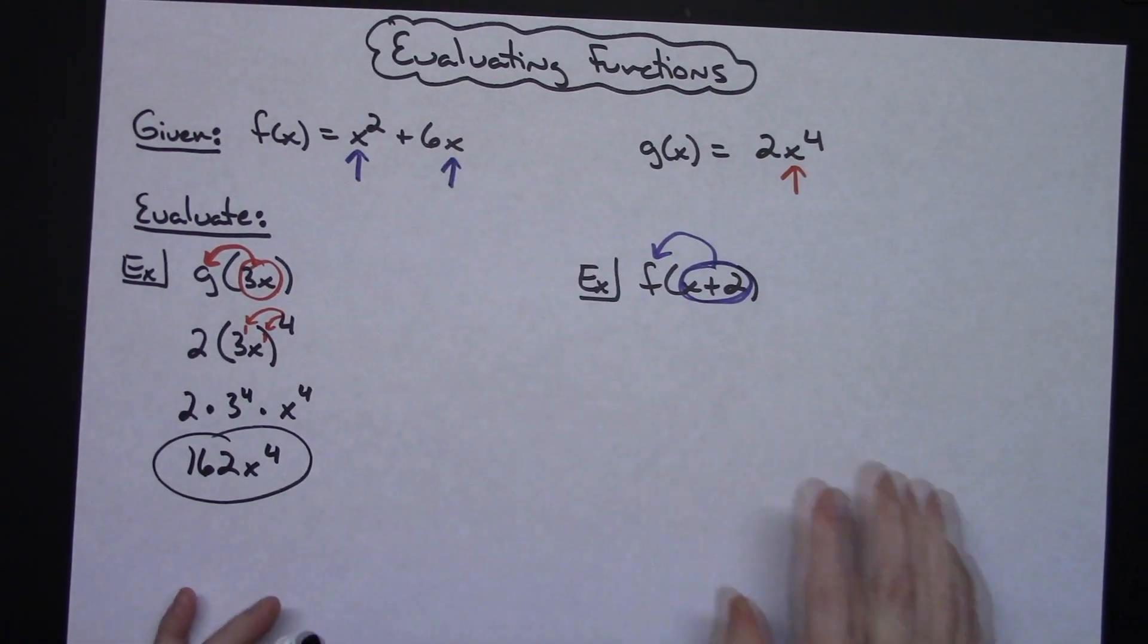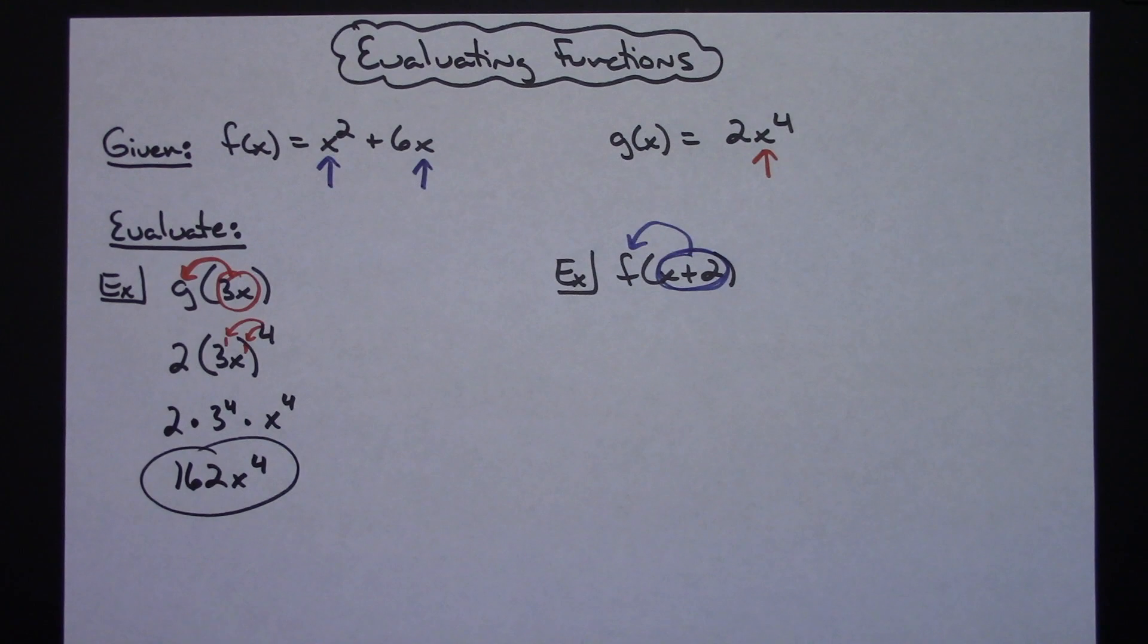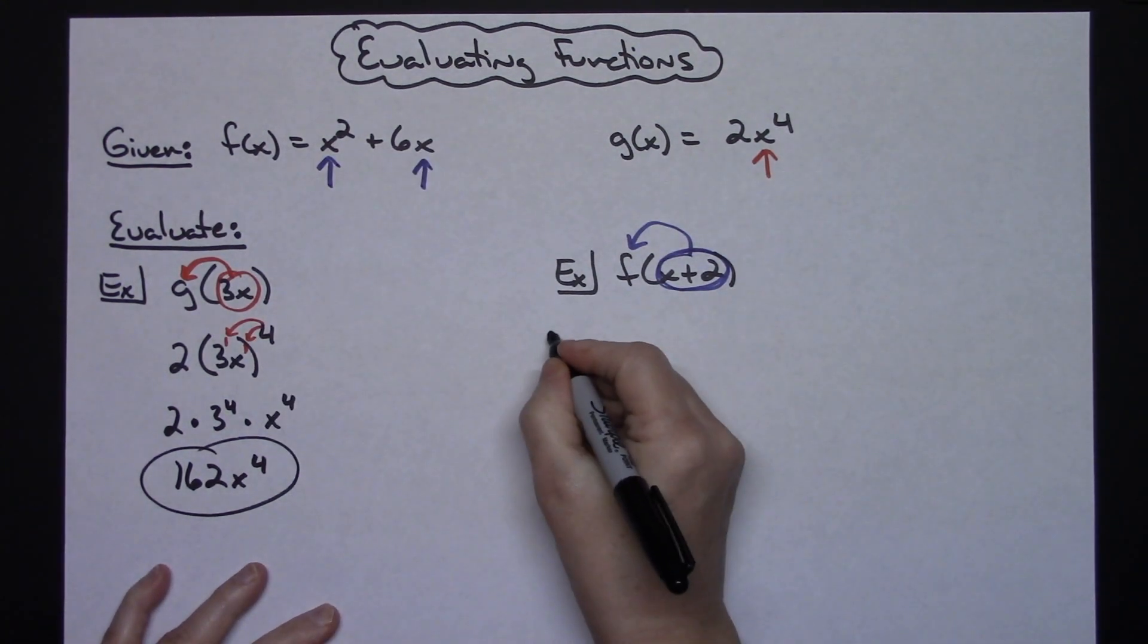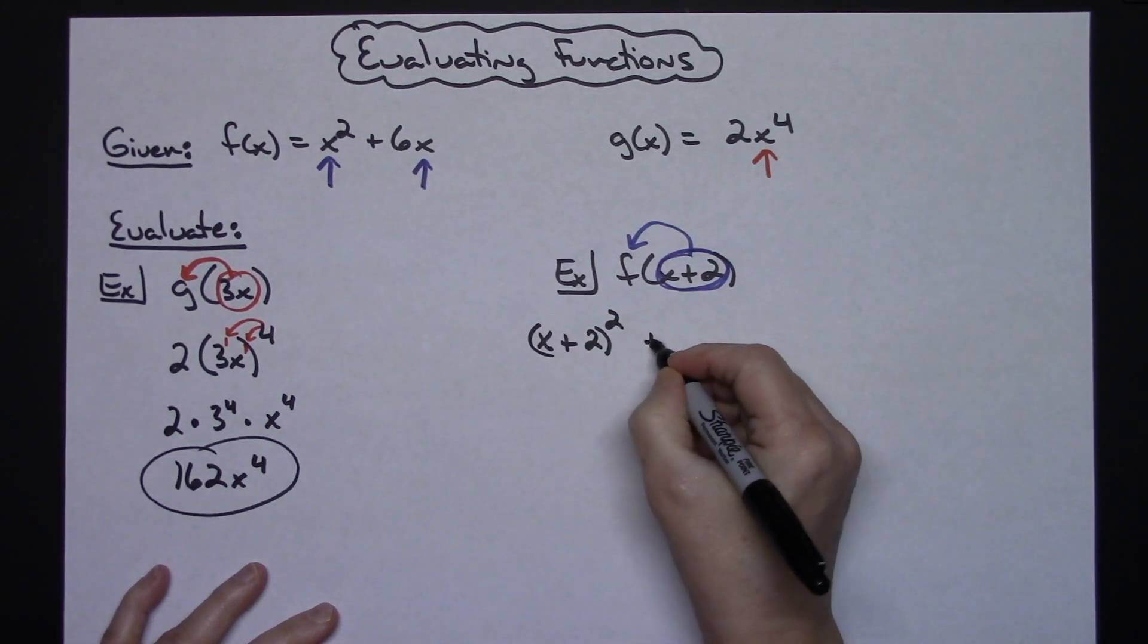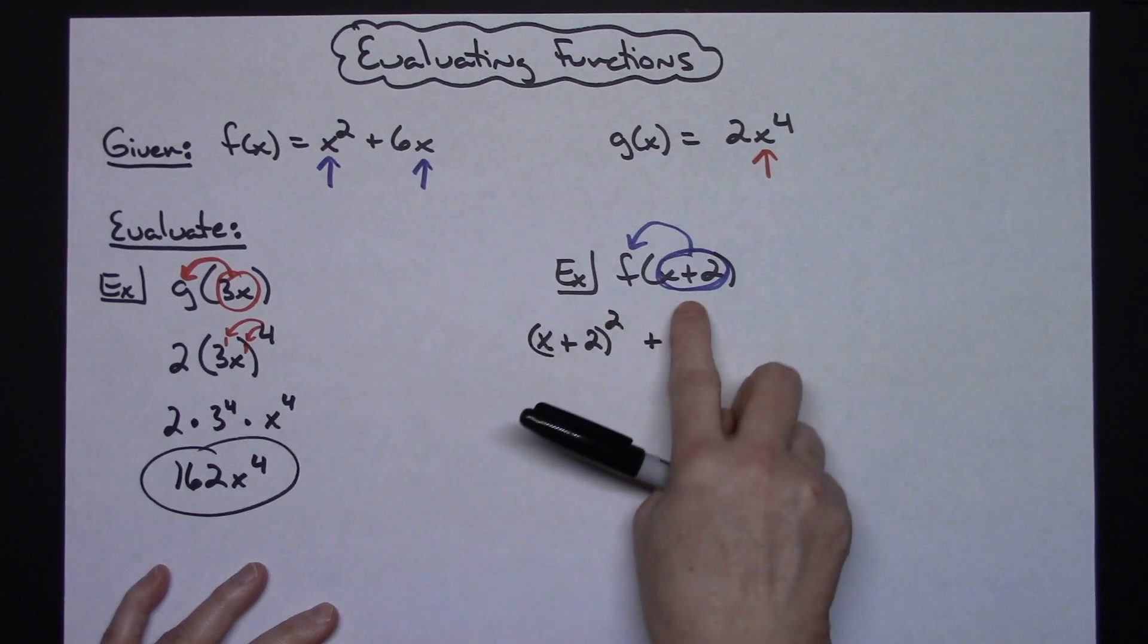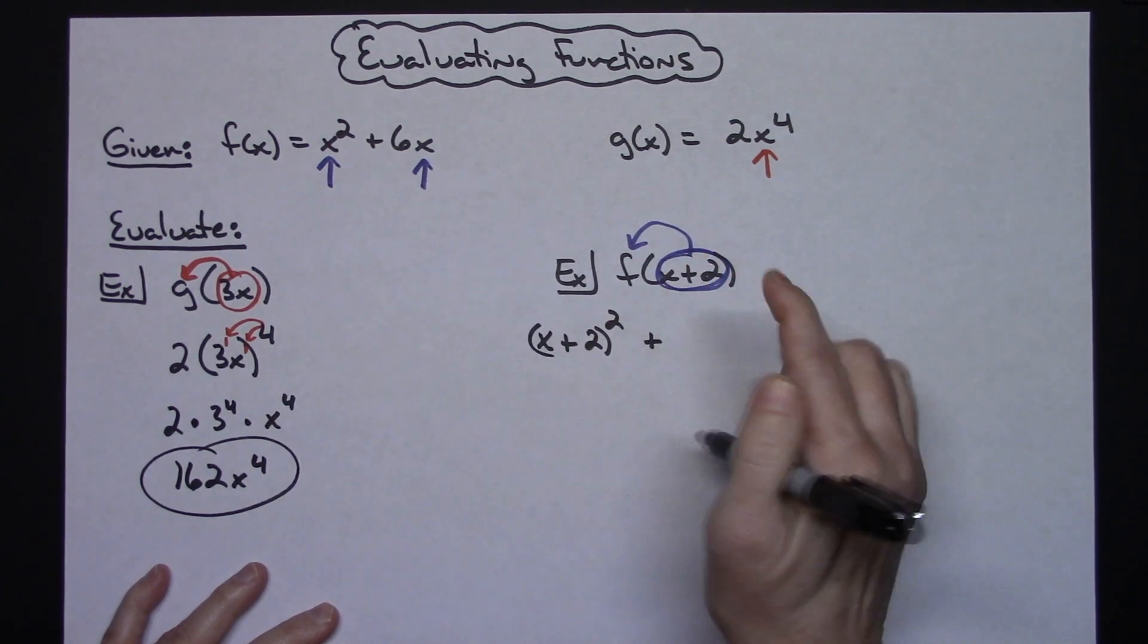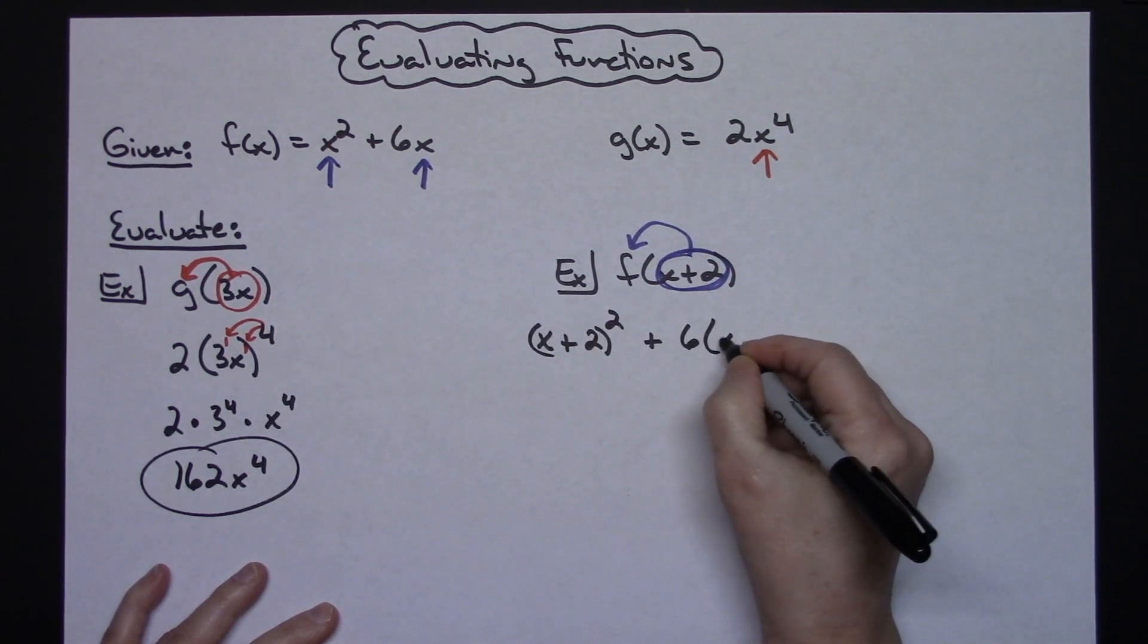I'm going to put it in and rewrite here. I'm going to take x+2 and put it in for that x, so I'll have (x+2) to the second power. Then I'll write the plus sign. This says 6 times x, so it'll be 6 times (x+2) with parentheses around that.